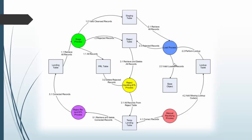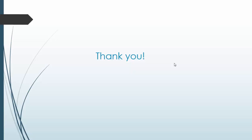I hope this session is helpful. The PRL table plays a very vital role in this reject record processing. We know the PRL table is used for delta detection, but it is also used for reject record processing. Thank you for watching. If you have any questions, please mention them in the comments below.